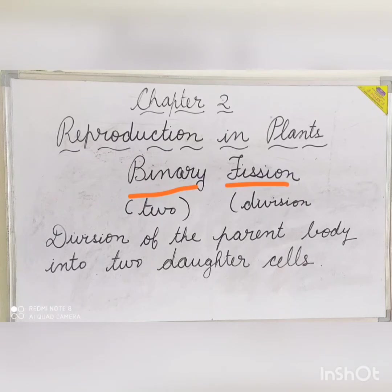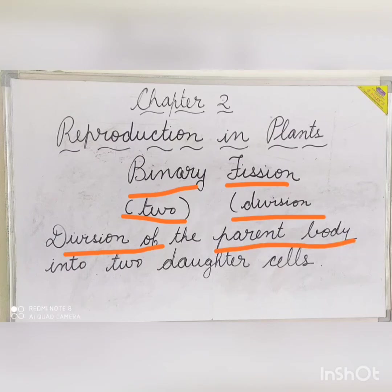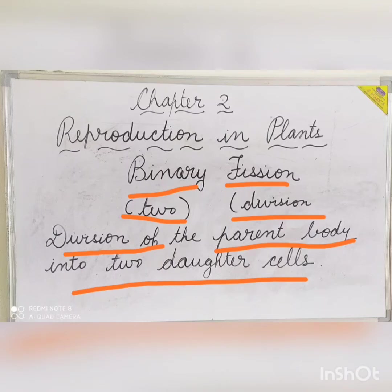Binary fission — as the word indicates, binary means two and fission means division. So binary fission is the division of the parent body into two halves to produce daughter cells. In this type of asexual reproduction, first the nucleus elongates and divides into two, then the cytoplasm splits across the middle and forms two daughter cells. Each daughter cell grows as a separate individual. This is the most primitive type of asexual reproduction, found in bacteria, fungi, and algae.